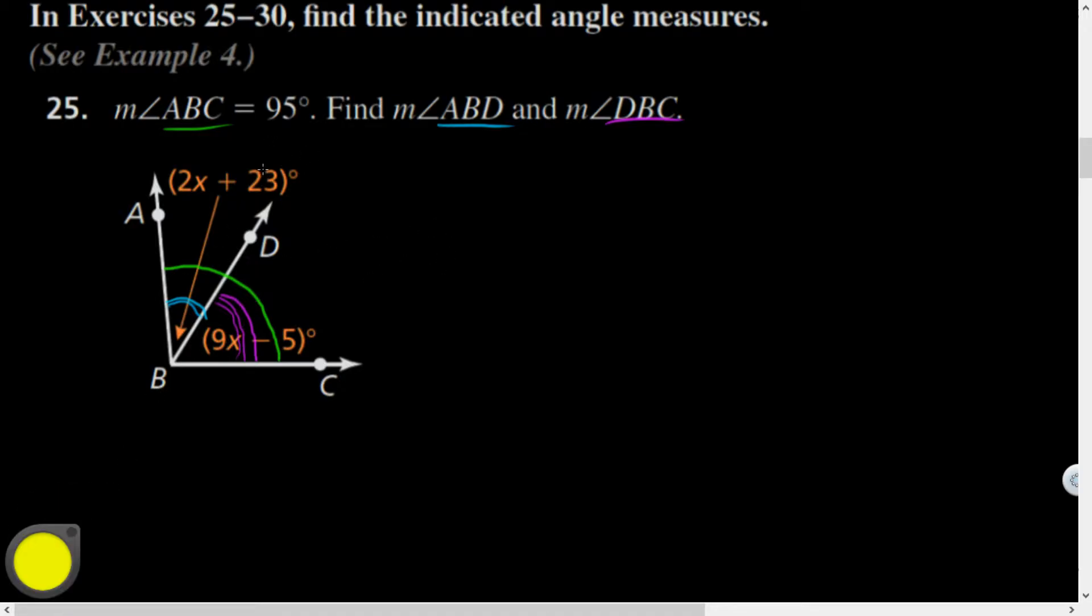First I'm going to find the value of x, then I'll find those individual angles. I'll write an equation: 2x plus 23 plus 9x minus 5 equals 95 degrees. Combining like terms: 2x and 9x is 11x, 23 minus 5 is 18. Now it's just classic algebra. 11x equals 95 minus 18, which is 77. Divide both sides by 11, and we get x equals 7.